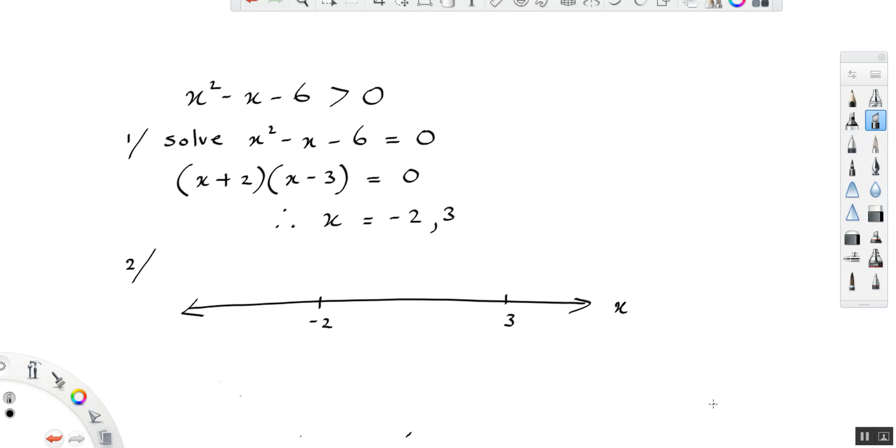There's the region that is less than minus 2, the region that's less than 3 but greater than minus 2, and the region x is greater than 3. So we're looking for that region in which the values of x squared minus x minus 6 are greater than 0.